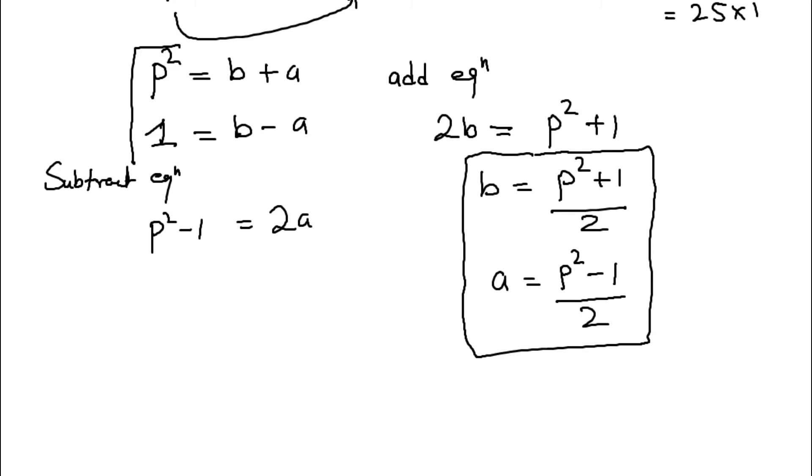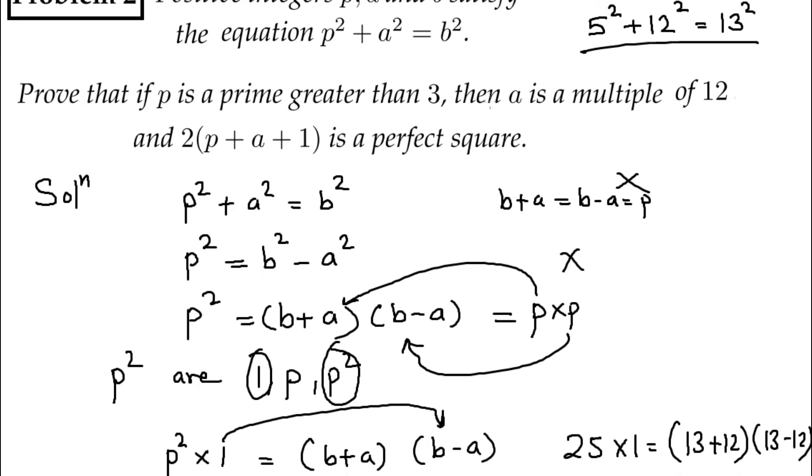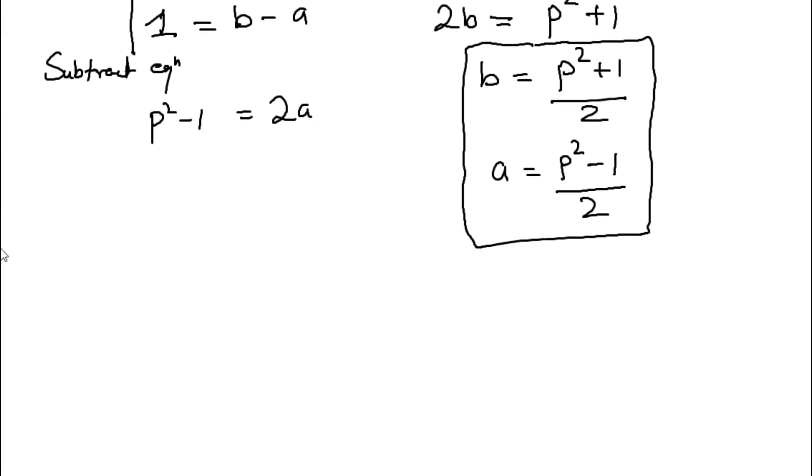Now the point here is what we need to prove? We need to prove that P is prime greater than 3 then A is a multiple of 12. How I will prove that? See, if I write 2A equals P square minus 1. You know that 2A can be divided with 2. That's for sure. And P square. P is a prime number. So obviously P is odd because the only prime number which is even is 2 and we are talking about more than 3.